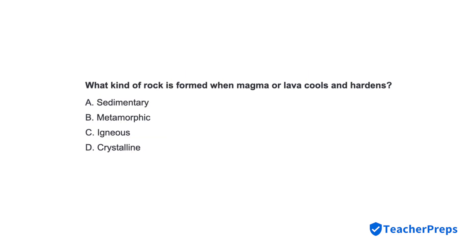What kind of rock is formed when magma or lava cools and hardens? Correct response is letter C, igneous.